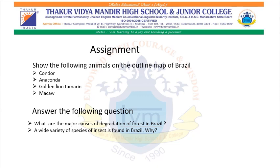We have completed the lesson by learning about the vegetation and animal life of Brazil. Today's assignment is to show the following animals on the map of Brazil: condor, anaconda, golden lion tamarin, and macaw. Also, answer the following questions: What are the major causes of degradation of forest in Brazil? And second, a wide variety of species of insects is found in Brazil — why?